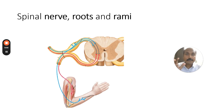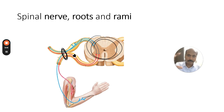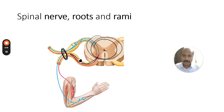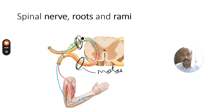Let us look at the difference between the root, trunk, and the ramus. This is the spinal cord, and you are seeing the spinal nerve emerging from it. The spinal nerve doesn't emerge directly — it emerges from a ventral root and a dorsal root. The ventral root and dorsal root are functionally unique: the ventral root is purely motor and the dorsal root is purely sensory. This is known as the Bell-Magendie law.